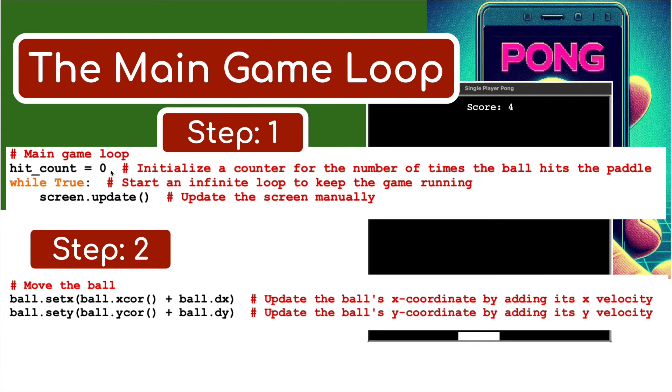Game loop - set a hit counter to zero, which relates to the score. While true, we update the screen manually. Then we're going to move the ball. Step two - move the ball. ball.setX() - using the coordinate, update the ball's X coordinate by adding its velocity. Then update the ball's Y coordinate by adding its Y velocity.